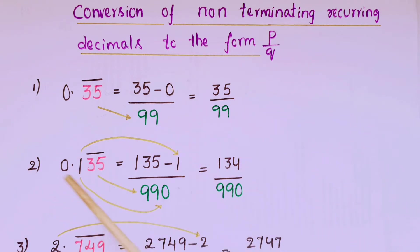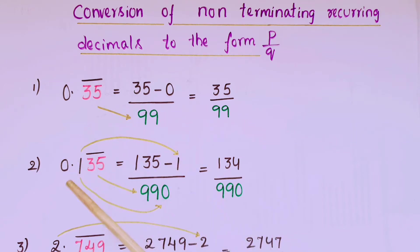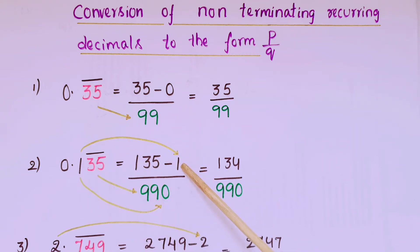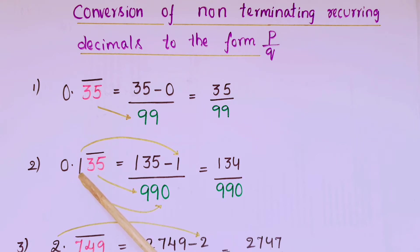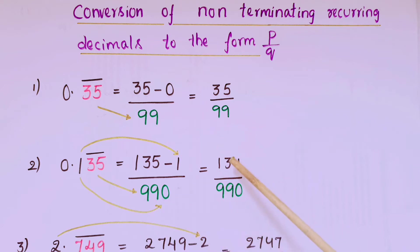The second one is 0.135 bar. First write the number 135, then minus the digits which are not below the bar — that is only 1, so write 1. Below the bar there are two digits repeating, so write two nines. After the decimal there is only one digit that is not repeating, so write one zero. That is equal to 134 by 990.